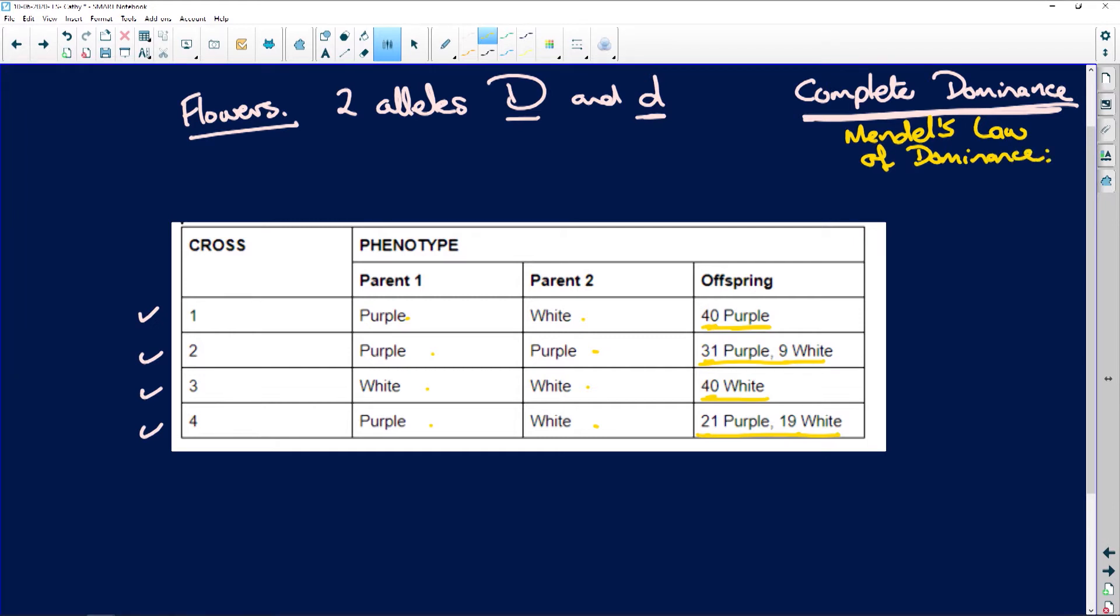Remember, when I take parents with pure characteristics, but they are contrasting, all the offspring are the color of, or will have the characteristic of the dominant parent. So if I cross this purple with this white, look, all the babas are purple. So what does that tell you? That purple is capital D, and white is equal to small d.